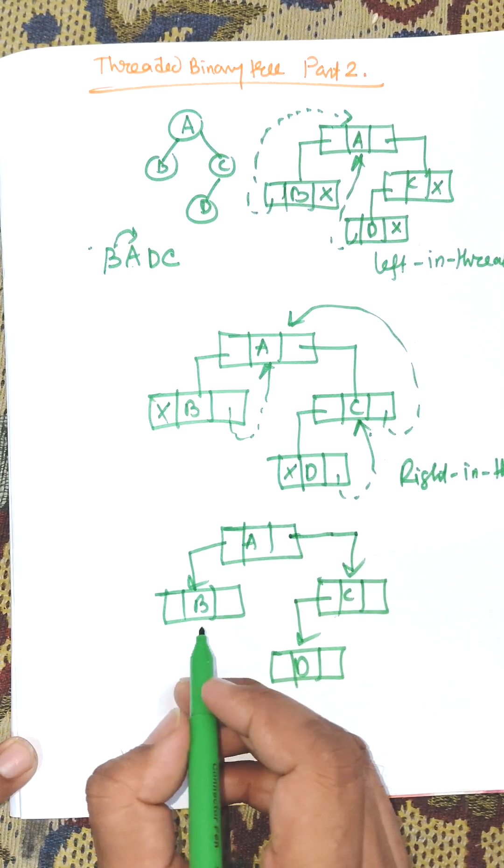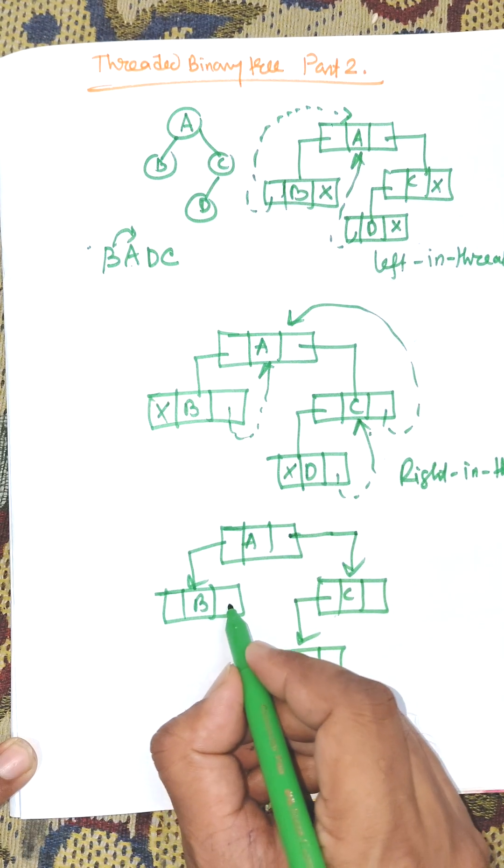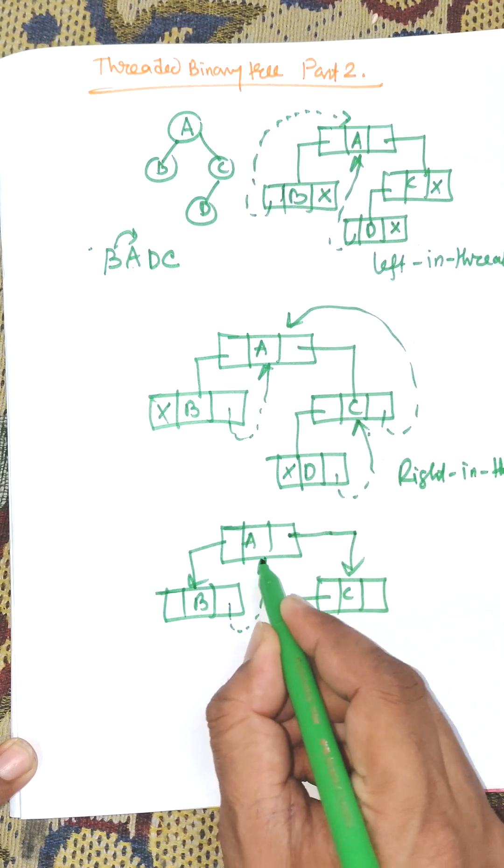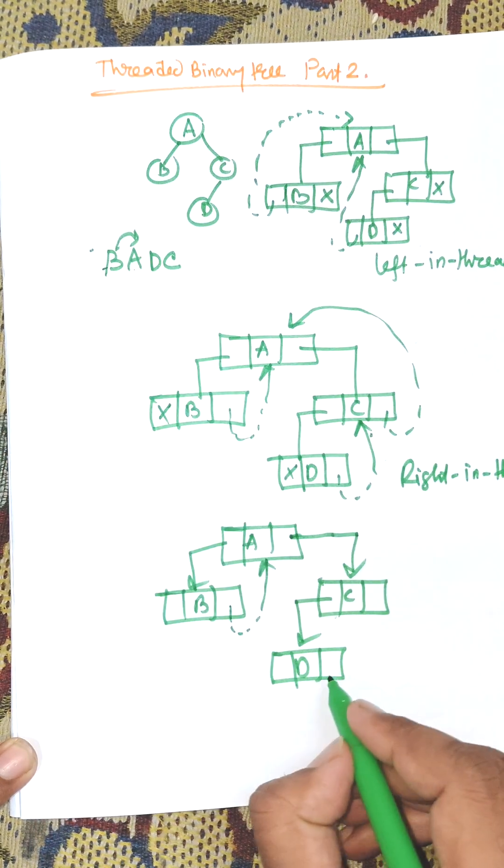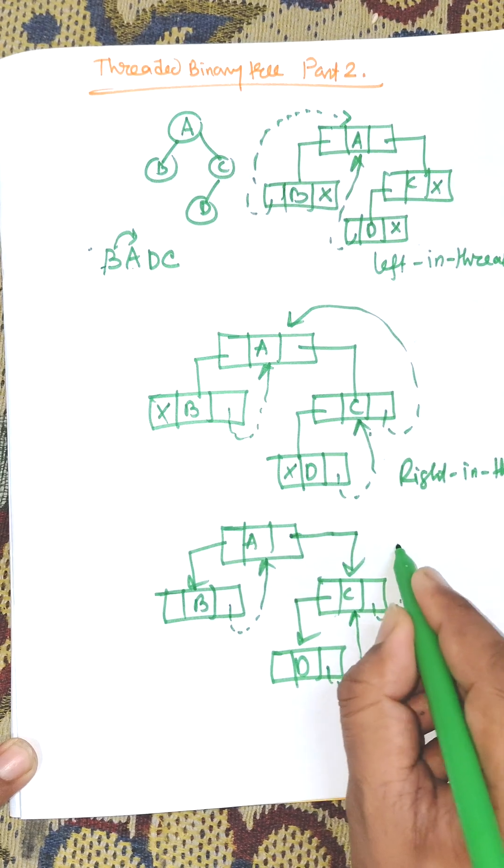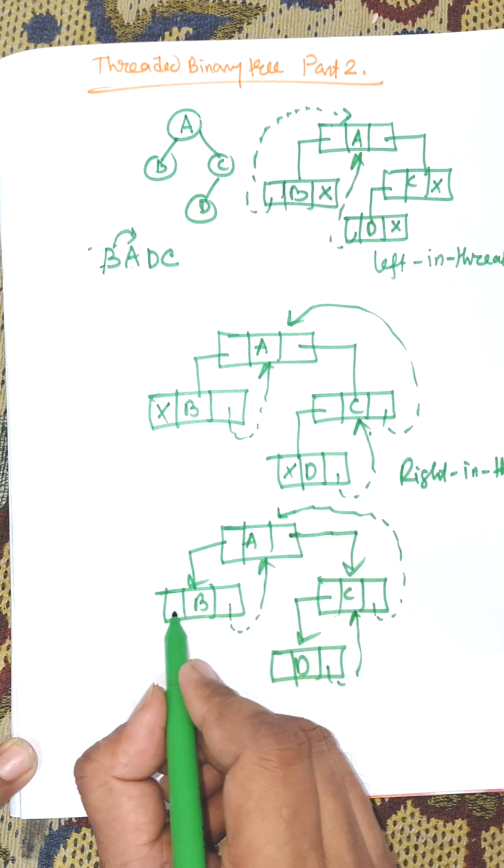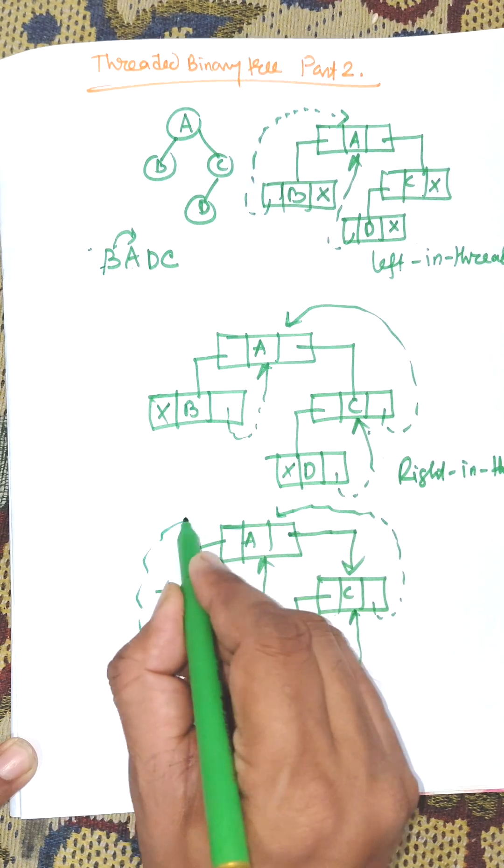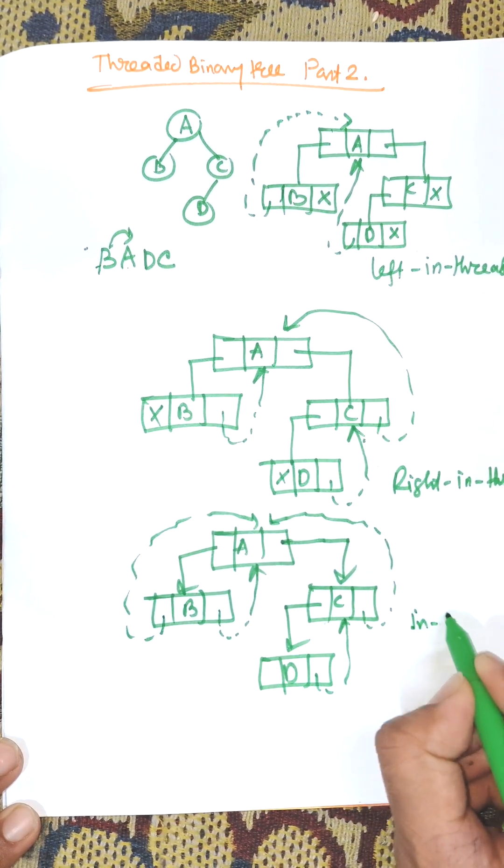We use both left and right pointers. The left pointer of B connects to its predecessor, and the right pointer of B connects to root A. This structure is known as a fully threaded binary tree.